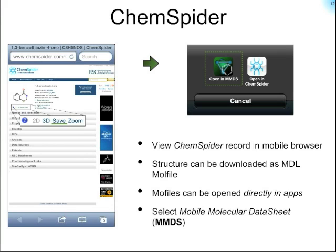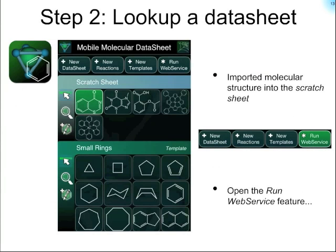Underneath the structure on ChemSpider, there's a link that says Save, which on a regular browser lets you download the mol file version of the structure. On the iOS platform, it compiles a list of all apps that have advertised their ability to understand mol files and pops up a list. One of these is an app called MMDS — Mobile Molecular Data Sheet. It launches this new app, hands over the mol file information, parses out the structure information, and appends it onto a collection called the Scratch Sheet. We've essentially assimilated internet-available information onto a mobile app.